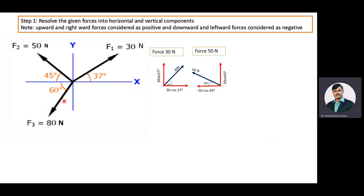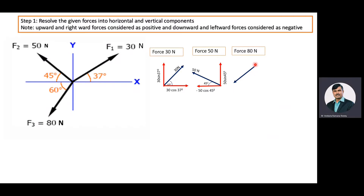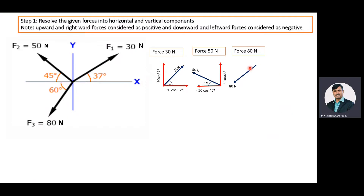Then we will find the components for the 80 Newton force. The 80 Newton force is making an angle of 60 degrees with the x-axis, and this force is an outward force, so the components are also outward from the body. The horizontal component is travelling in the left-hand direction, so it becomes minus 80 cos 60 degrees. The vertical component is travelling vertically downward, so it becomes minus 80 sin 60 degrees.